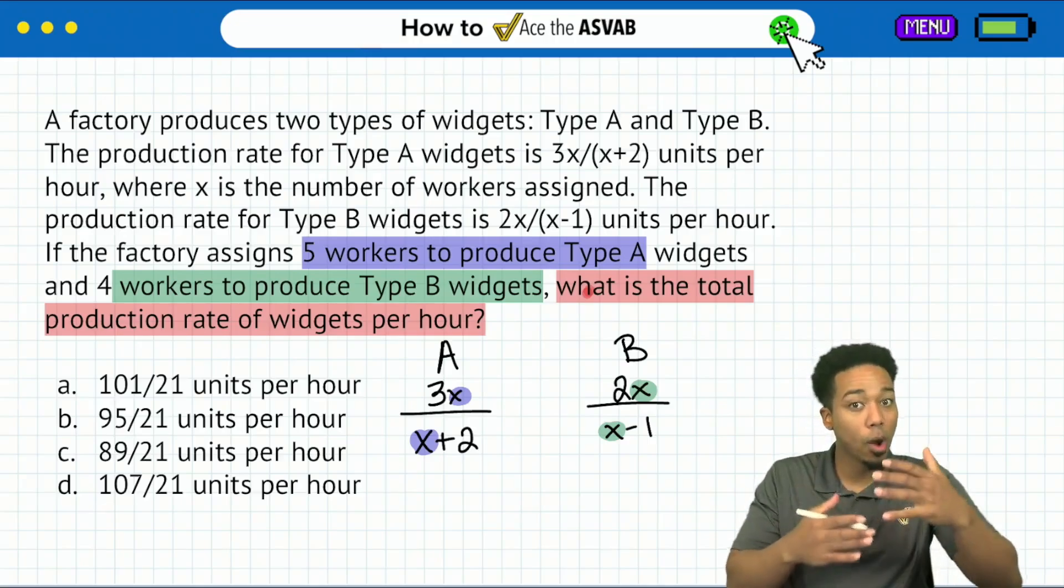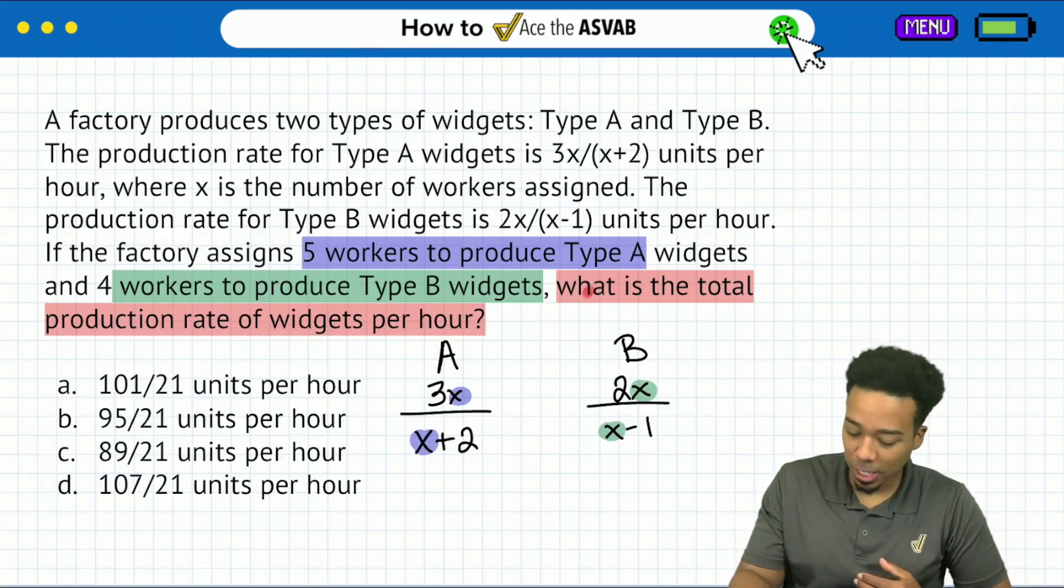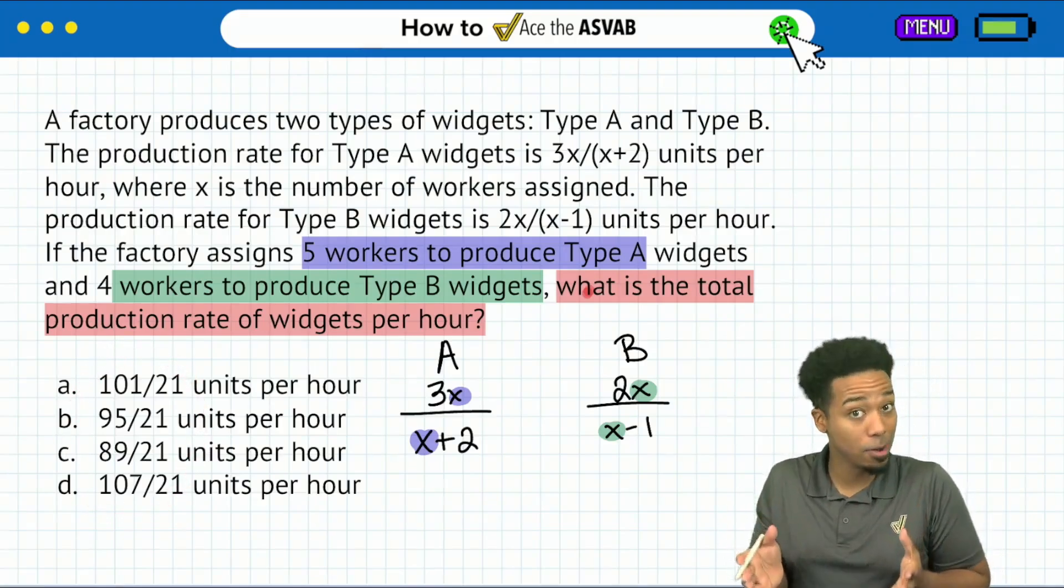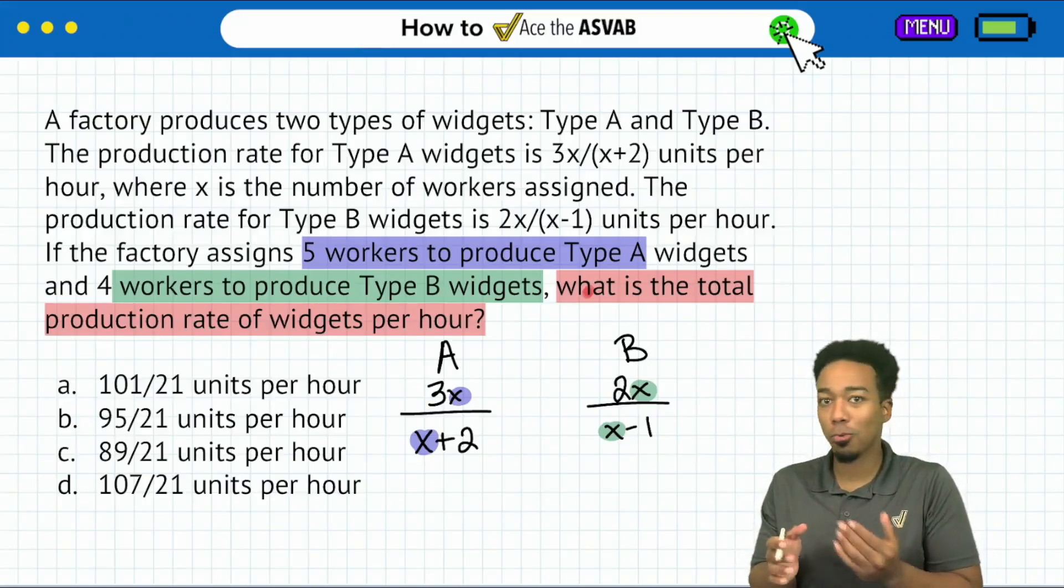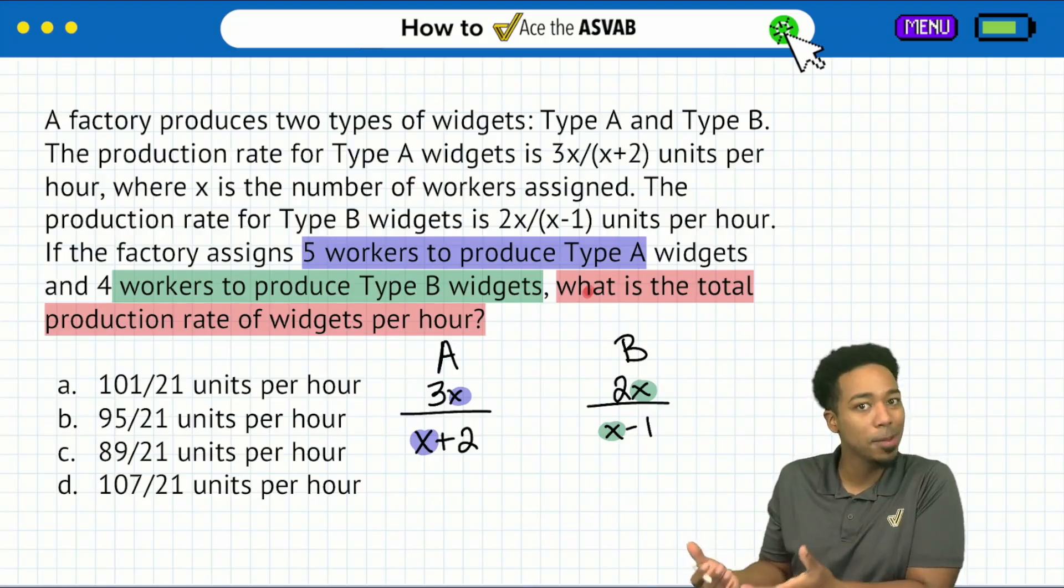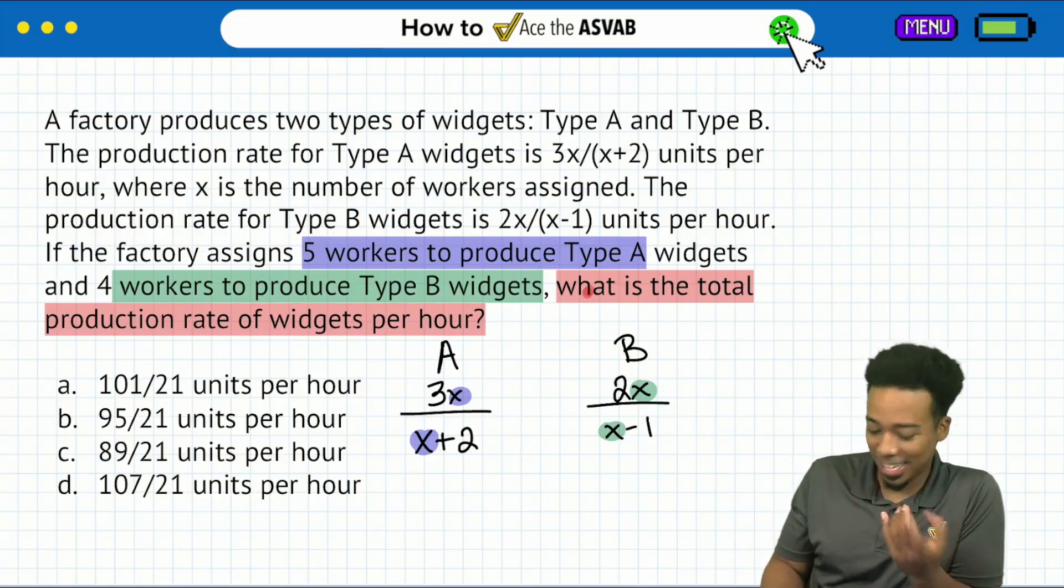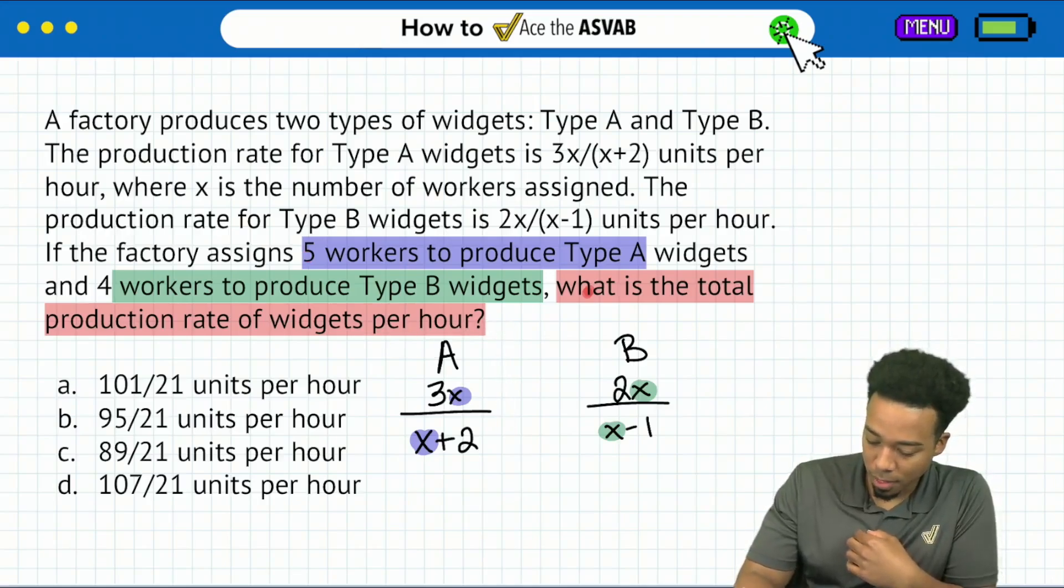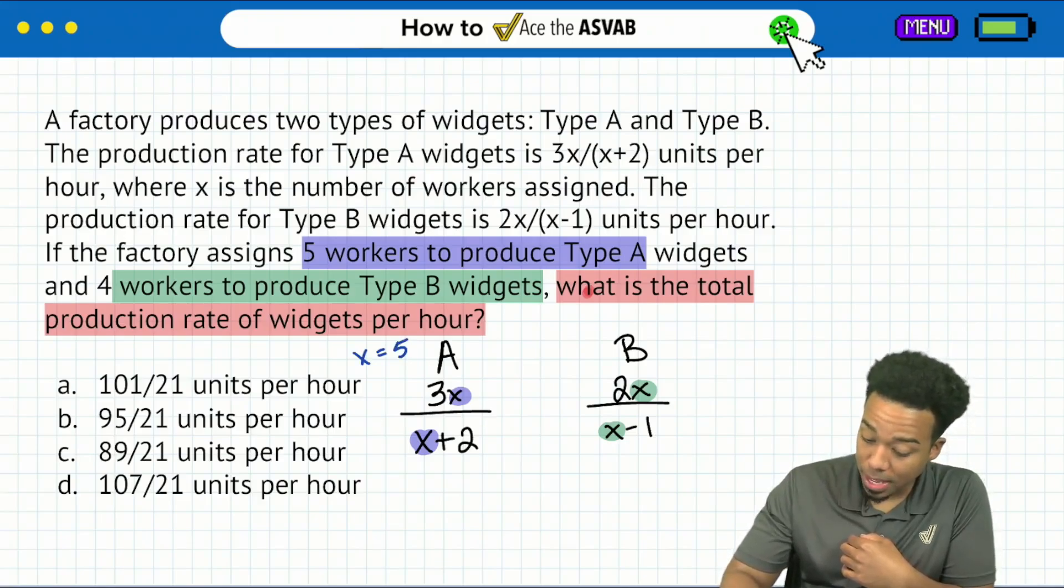So are you seeing where we're going with this now? Look at the final answer. The final answer is a fraction without the variable without the x. So we kind of have to go ahead and replace the x with something. And that's what they give us here. For type A, they gave us five for the x. And then for type B, they give us x equals four.